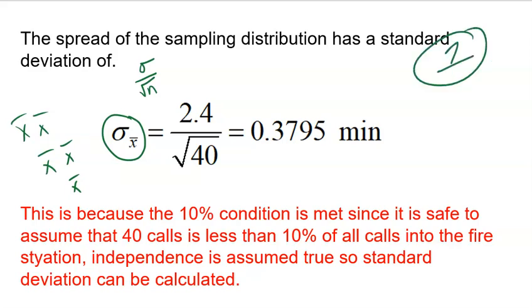We're not talking about one phone call. We're talking about the mean of 40 phone calls. So that is why we take the 2.4 and divide it by the square root of 40 to get the standard deviation for the means of 40 phone calls.